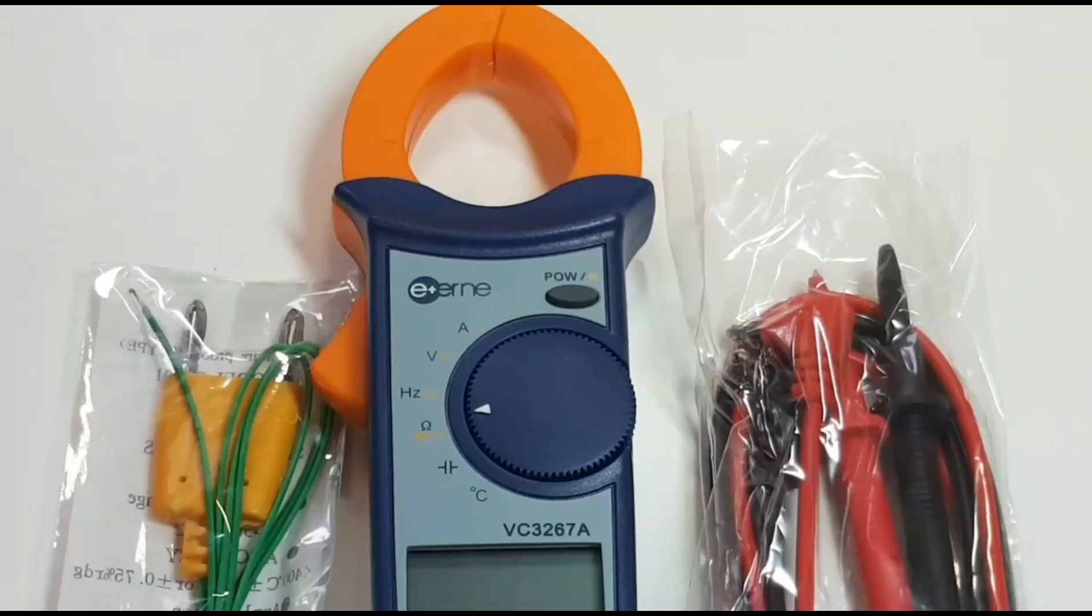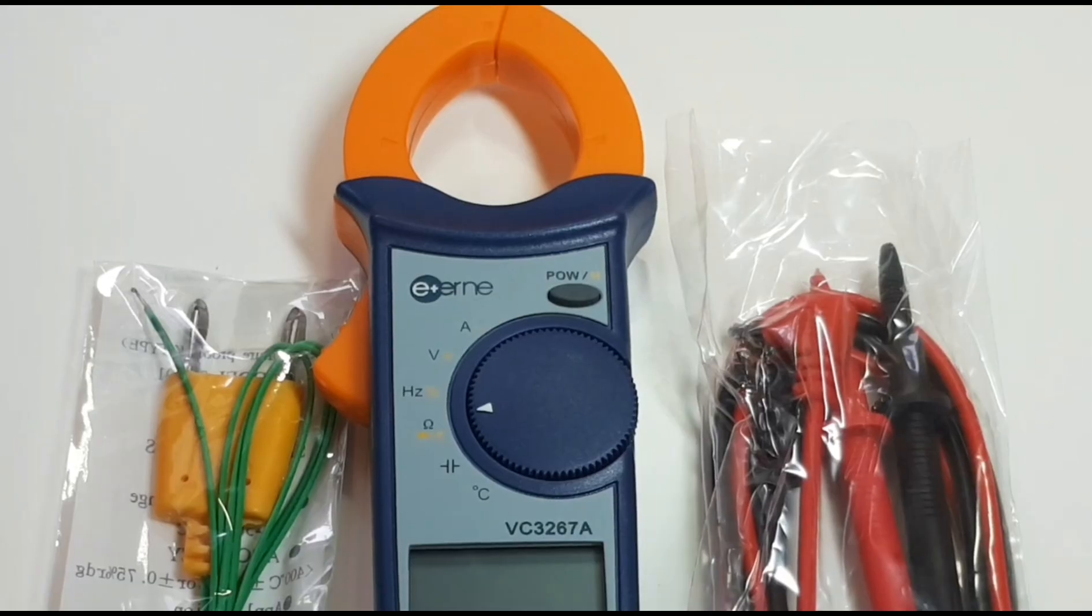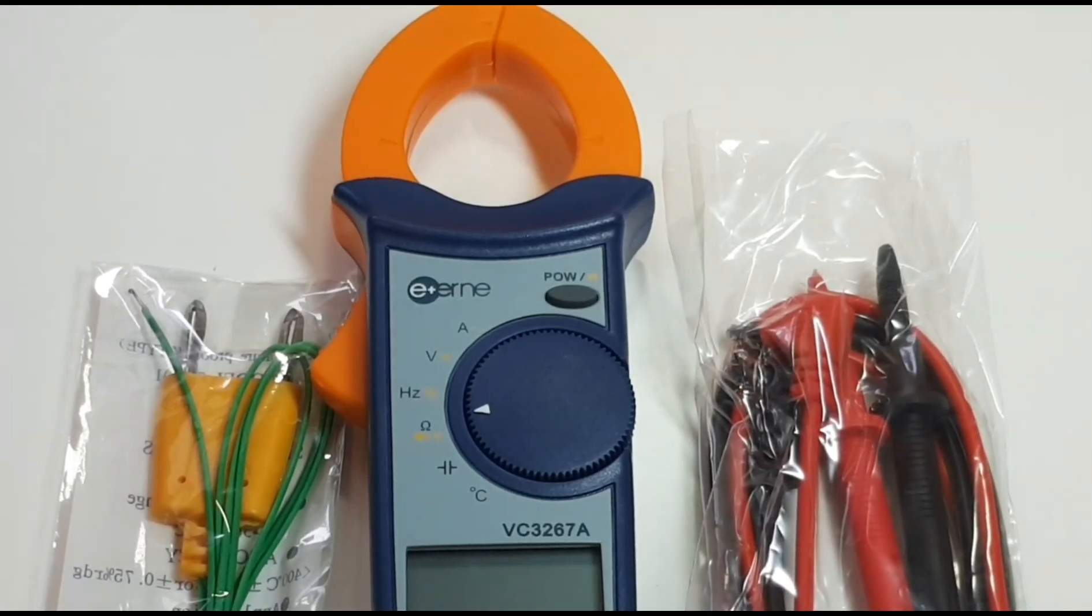The meter itself is a 4000 count multimeter and it has an integrated AD converter. The refresh rate, so they say, is approximately three times per second and it comes with two triple A batteries.